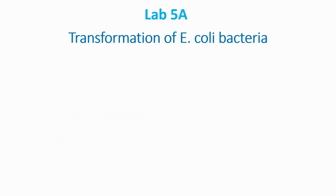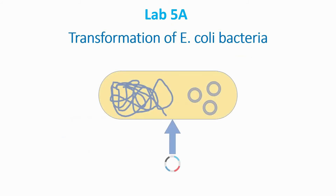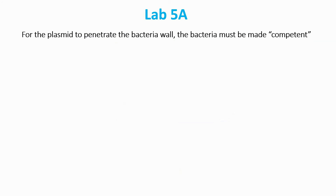In Lab 5A, we transform E. coli bacteria by inserting the PARA-R plasmid into the bacteria cells. Transformation is foreign gene introduction and expression through the uptake of genetic material — in this case the PARA-R plasmid — from a bacterium's surroundings. For the PARA-R plasmid to penetrate the cell membrane, we have to change the bacteria to a state where they can accept the plasmids. We call this making the bacteria competent.